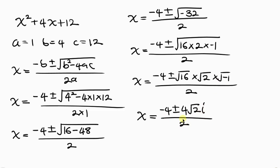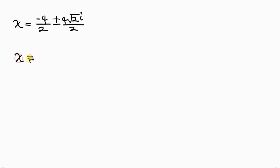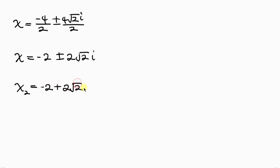So we have x equals negative 4 plus or minus 4√2·i, all over 2. Splitting the fraction: negative 4 over 2 plus or minus 4√2·i over 2, which simplifies to negative 2 plus or minus 2√2·i. So the second value of x is negative 2 plus 2√2·i, and the third value of x is negative 2 minus 2√2·i.